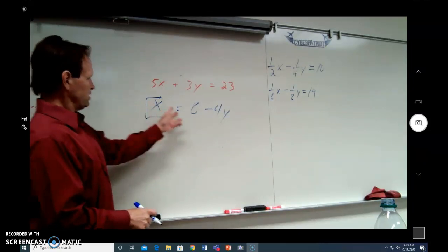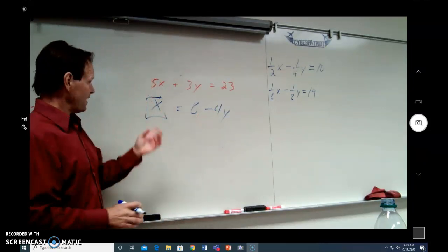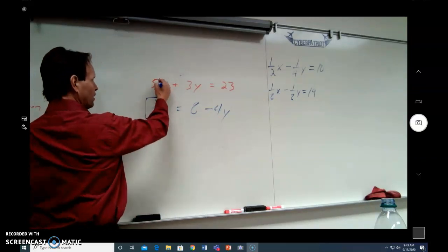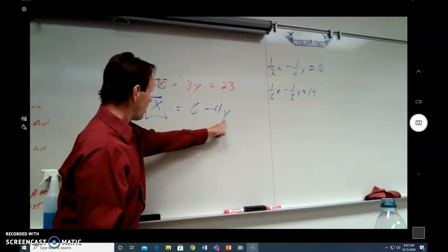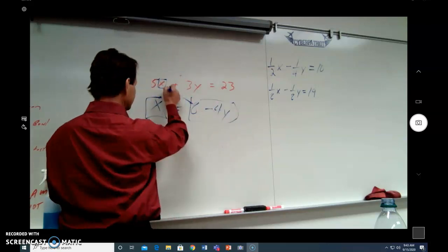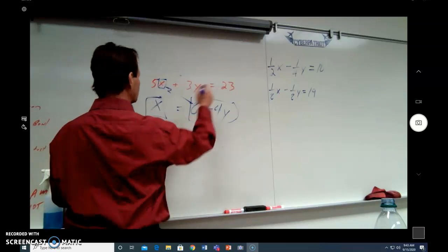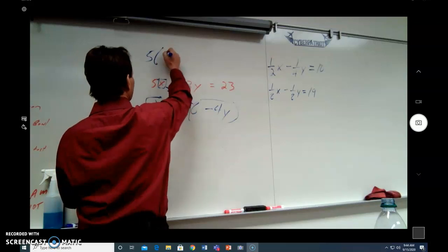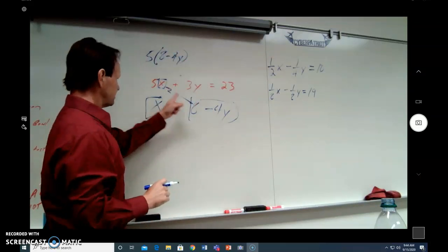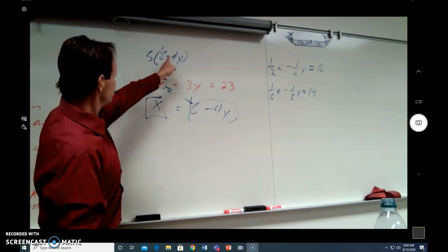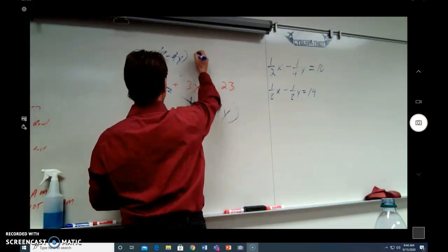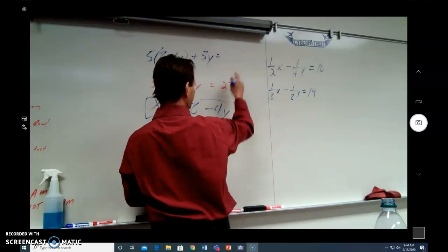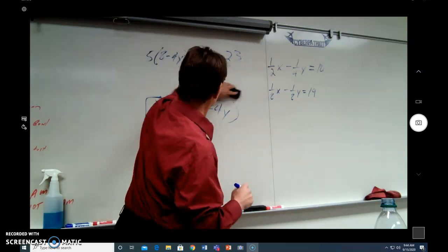You can express x as 8 minus 4y. Therefore, up here where we have an x, x is 8 minus 4y. Therefore, we can rewrite this whole equation. And where the x is, we substitute that: 5 times 8 minus 4y. We can change that x into 8 minus 4y, and then we just rewrite the rest: plus 3y equals 23. Now we can get rid of that because we've rewritten that equation.